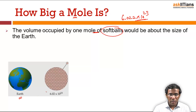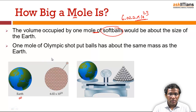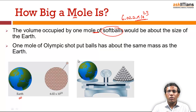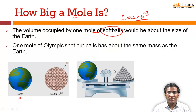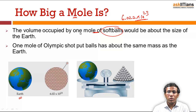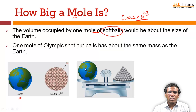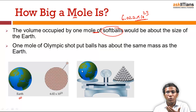Here is another interesting example: take one mole of Olympic shot put balls and measure their weight — that weight would be approximately equal to the weight of the Earth. So you can see how huge one mole, that is 6.022 × 10²³ particles, really is. Even one drop of water contains around 10²¹ to 10²² water molecules — you can see how huge this number is.